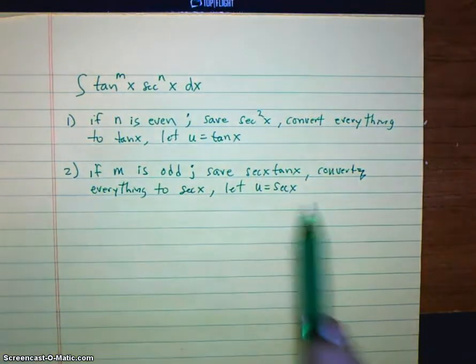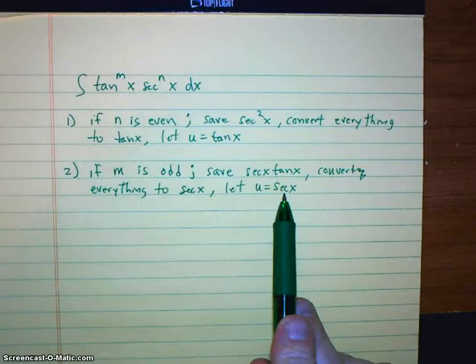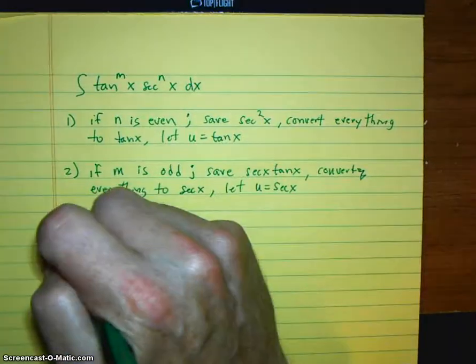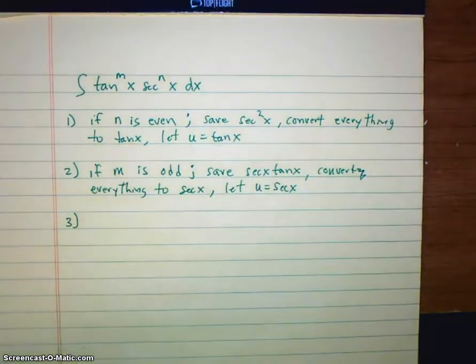And let u be secant x. And again, the idea is the derivative of secant will give us secant tangent. Rule three. If neither of those two things happen, hope and pray.